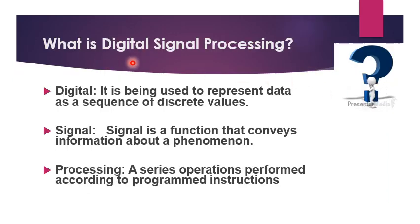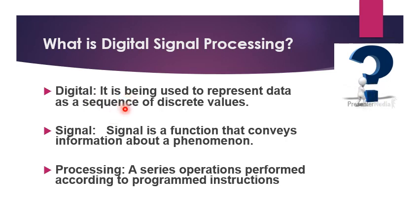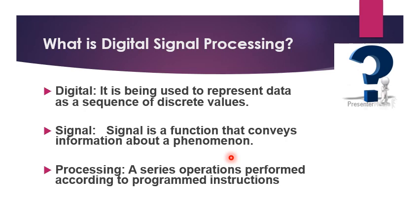What is digital signal processing? I am going to explain what is digital, what is signal, and what is processing. Digital is nothing but a way of representing data as a sequence of discrete values. A signal is a function that conveys information about a phenomenon. And processing is a series of operations performed according to programmed instructions.